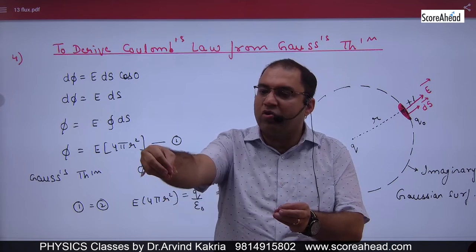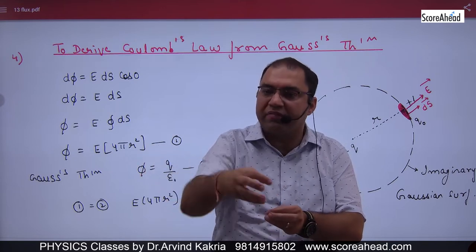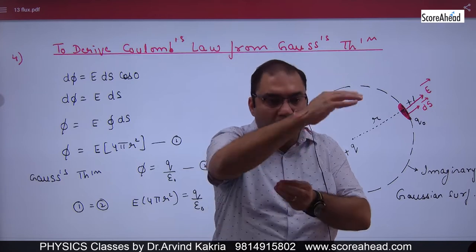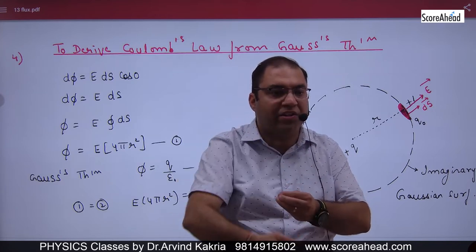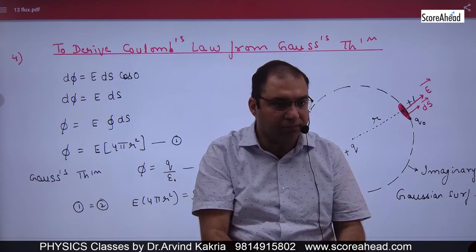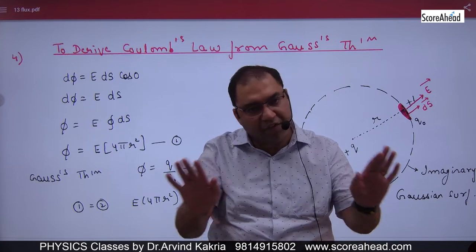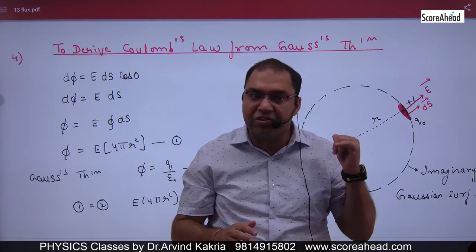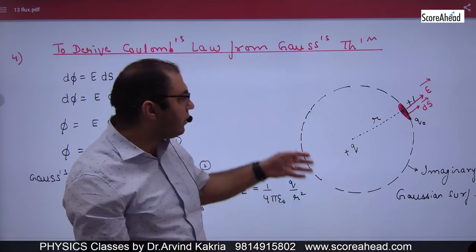Now at r distance is a Gaussian surface. If you take any Gaussian, what will it be? An imaginary sphere. So this imaginary Gaussian sphere is not actually a sphere.